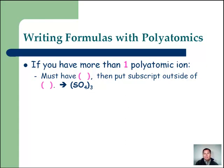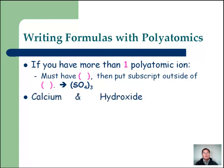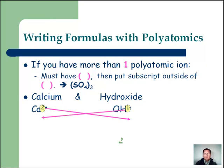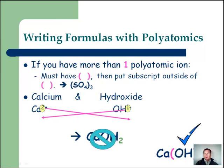If the subscript is a one, you don't need parentheses. For right now, if you put all your polyatomics in parentheses, I won't mark off if it's a one with parentheses. But if you need parentheses and don't use them, I will definitely mark off. For calcium hydroxide: calcium has a plus two charge, hydroxide is minus one. When we crisscross, the two comes down to hydroxide — we put hydroxide in parentheses and place the subscript outside.